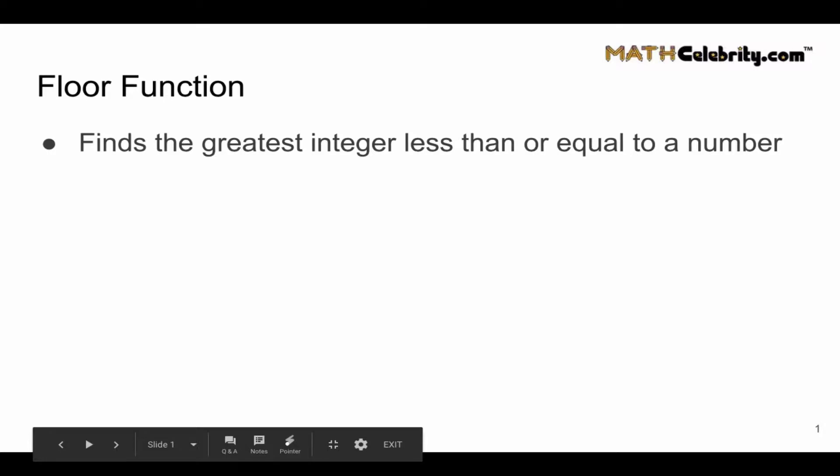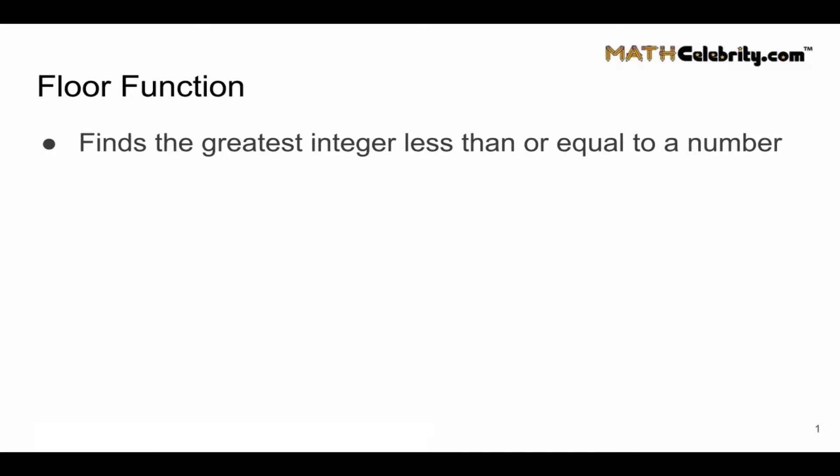Well it finds the greatest integer less than or equal to a number, and the floor of a number x is denoted as this right here. So we've got half braces where the bottoms are showing, the tops are cut out, and to find a floor of a number there's two checks you do.